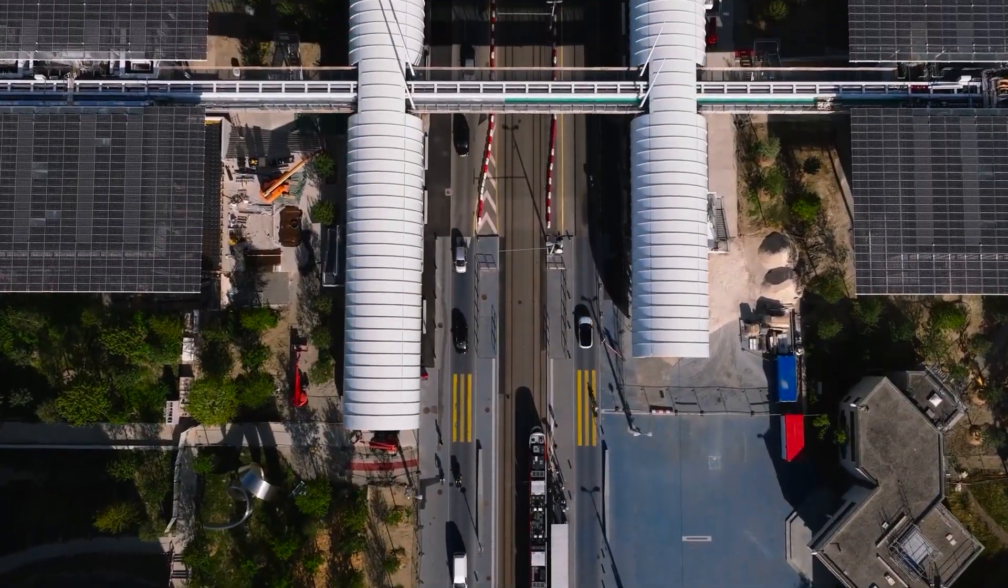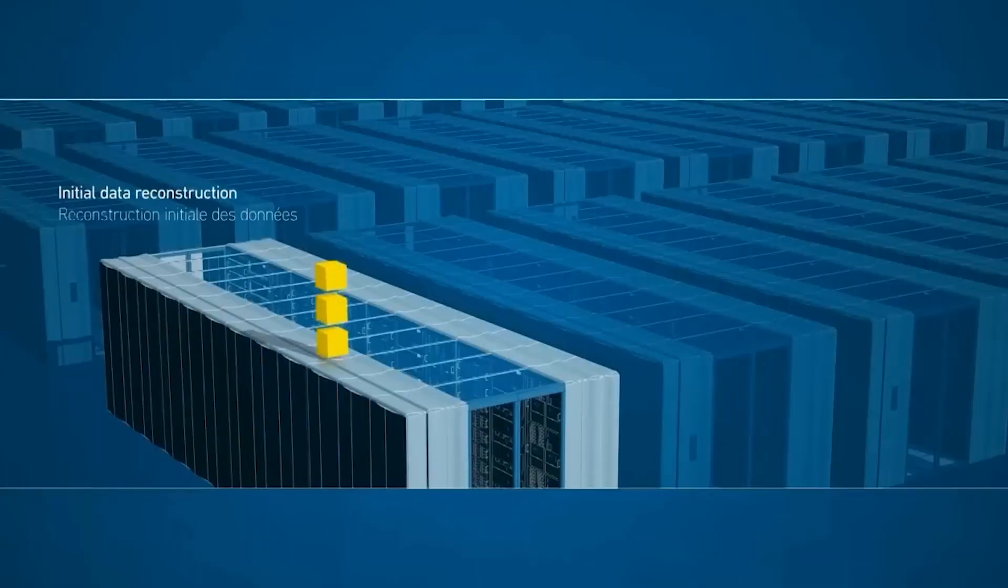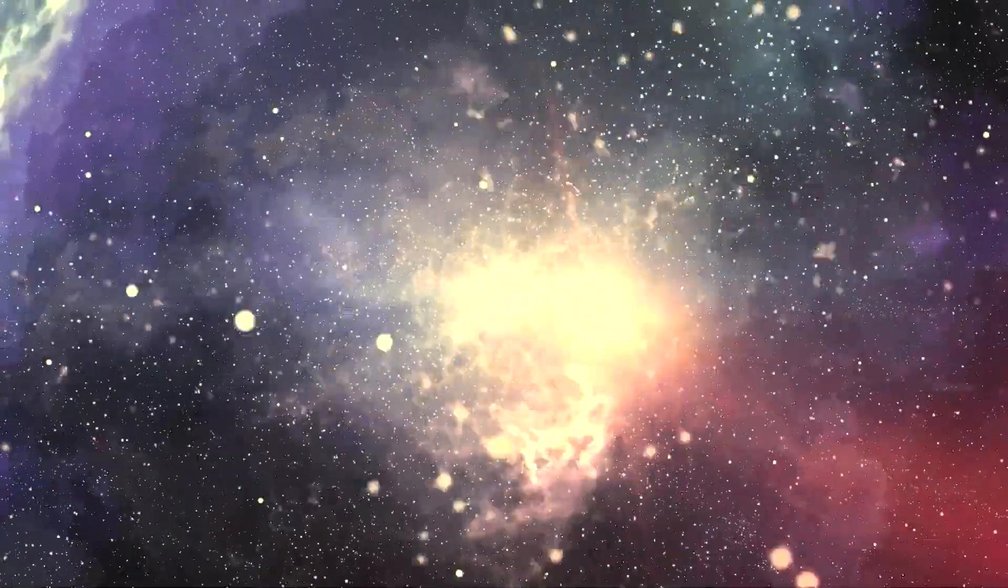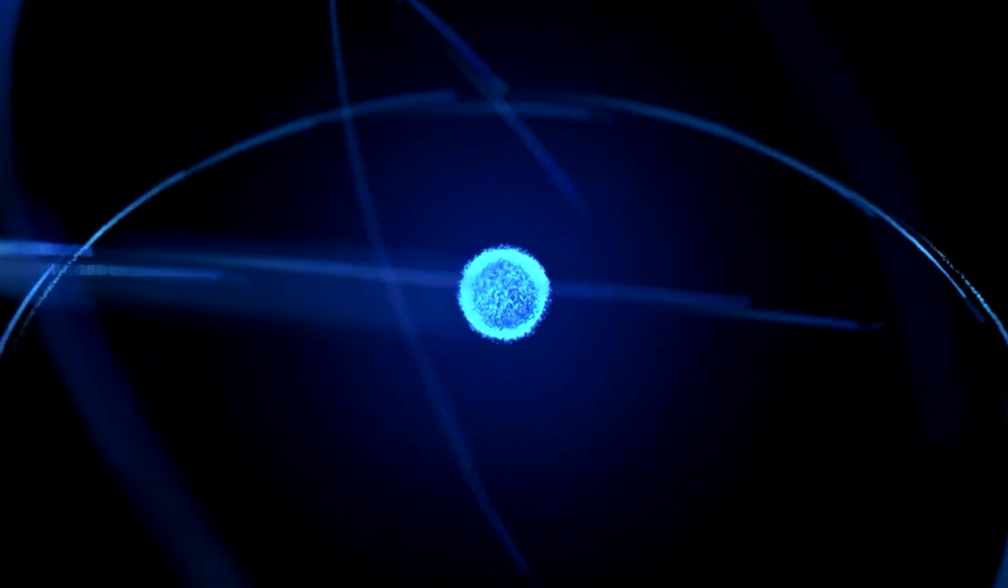The collider at CERN is a huge deal for science. It makes tons of data, like 15 petabytes each year, and helps scientists understand the smallest things in our universe. It's a bit like a big microscope that smashes particles to help us learn more about how everything is put together.